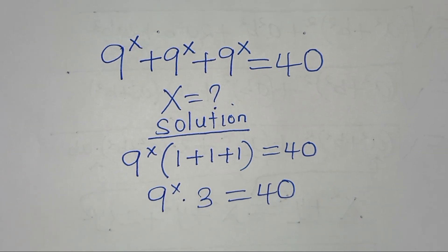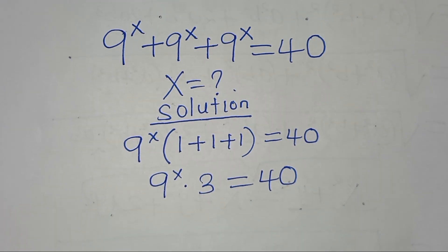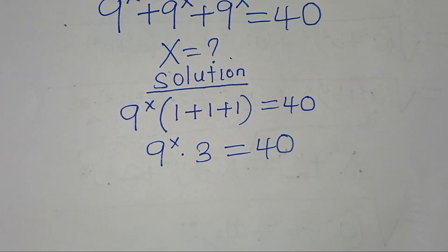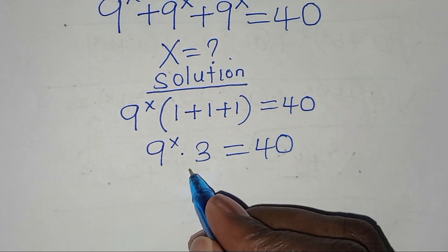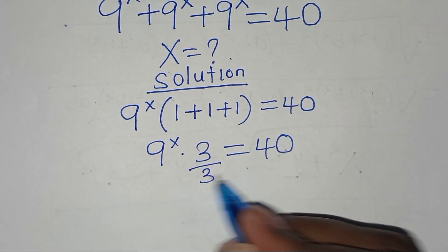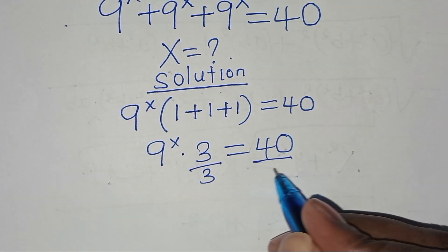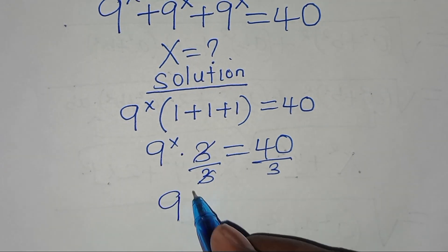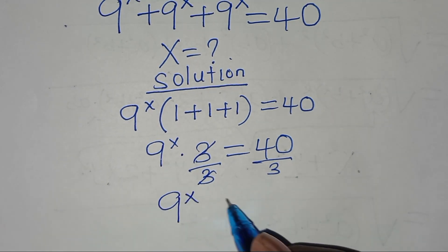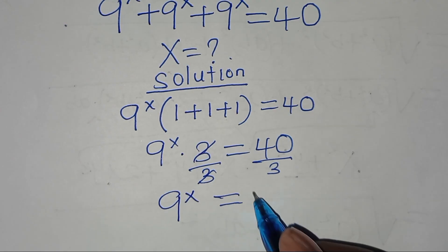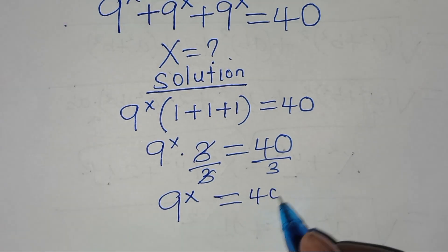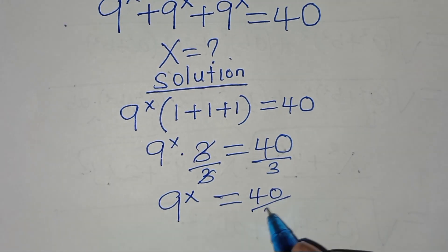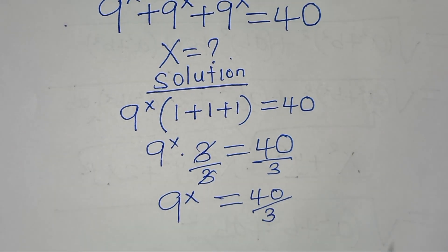Now let's divide both sides by 3, so that we have 9 to the power x equal to 40 over 3.